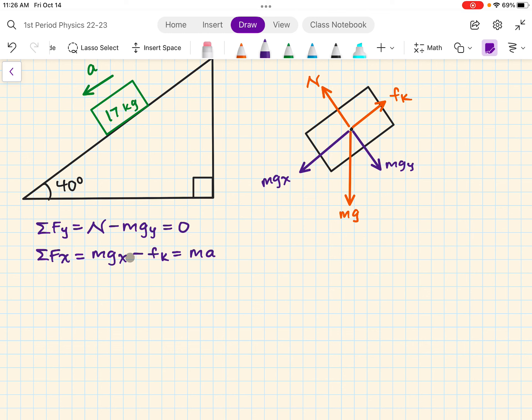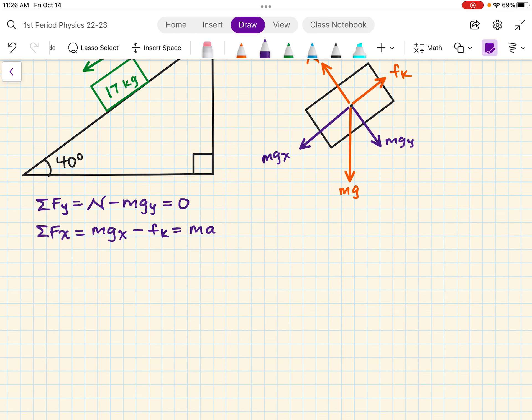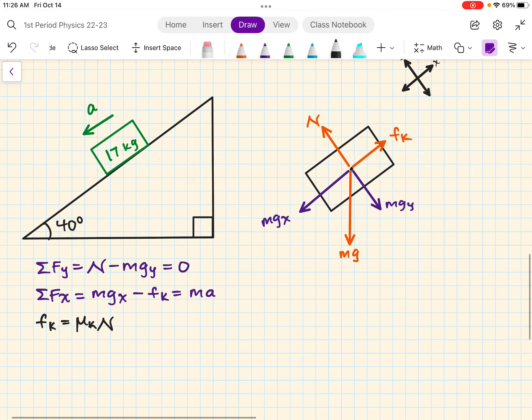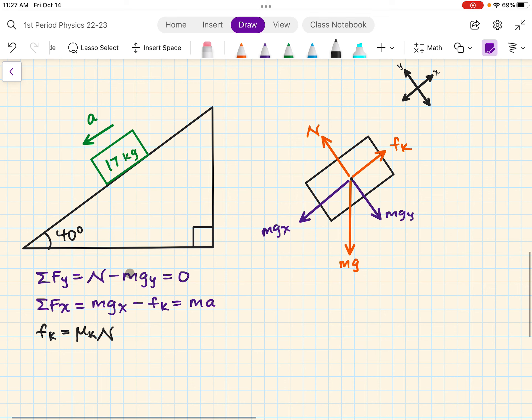We know, using trig, what mgx is. And we can find kinetic friction because we were given the coefficient of kinetic friction. So let's use that formula. I'm going to change colors. Let's use black. So I know that the force of kinetic friction is equal to the coefficient of kinetic friction times the normal force. Well, we don't know the normal force. However, we can solve for it using the sum of the force along the y because we know there's no acceleration along the y like this.